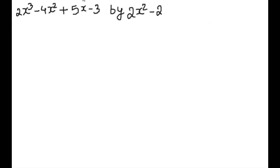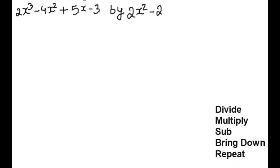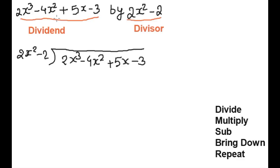The question is: 2x cubed minus 4x squared plus 5x minus 3, divided by 2x squared minus 2. Again we will follow the same steps: divide, multiply, subtract, bring down, and repeat as long as possible. I will write all five steps on the side so it will be easy to follow. In polynomial function we follow these five steps, but it is a little bit different because we will divide the higher degree term with the higher degree term.